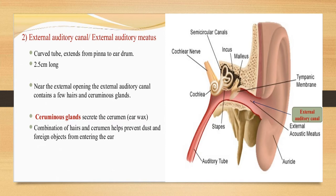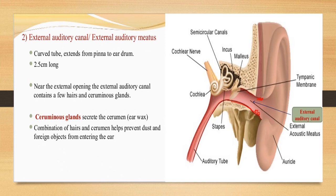The external auditory canal is a tube about 2.5 cm long. Near its external opening, it contains a few hairs and ceruminous glands that produce wax. Together, the hairs and ceruminous glands help prevent the entry of dust particles or foreign objects. The canal ends at the tympanum membrane, or eardrum — a semi-transparent partition between the external auditory canal and the middle ear, covered by epidermis and made up of simple cuboidal epithelium. The eardrum helps in amplification of sound.